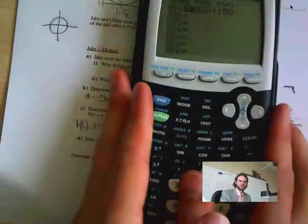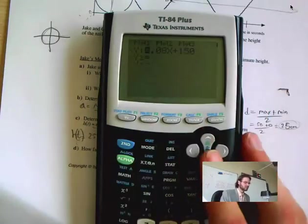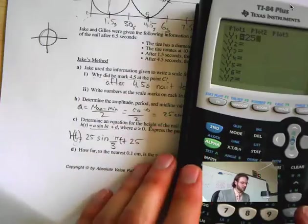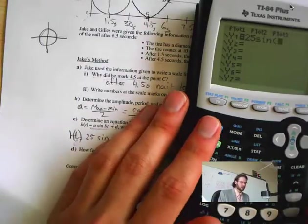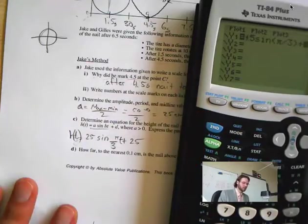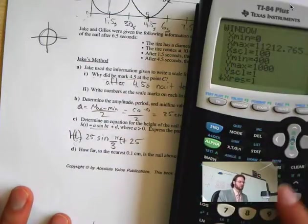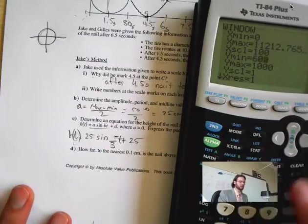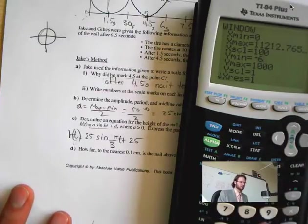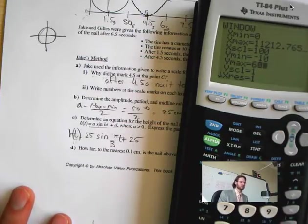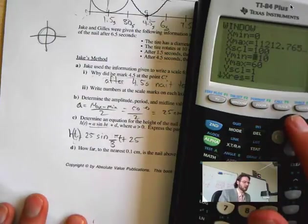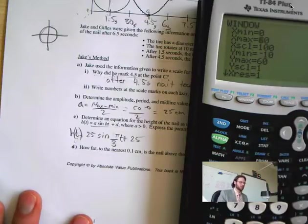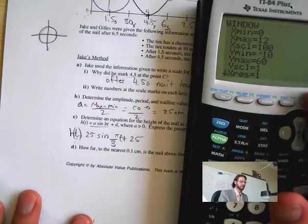I plug everything into my graphing calculator. My equals. Just make sure my mode is in radians. Clear. So we have 25 sine, here's my sine. Sine and second, pi over 3, bracket, plus 25. And my window. My max is going to be 60. My min, negative 10 because we don't really go below. My x, I want to say is going to be 12. I want to see two periods.